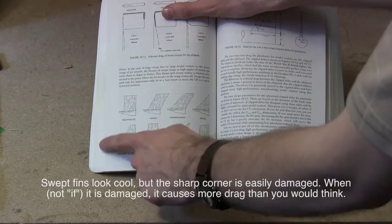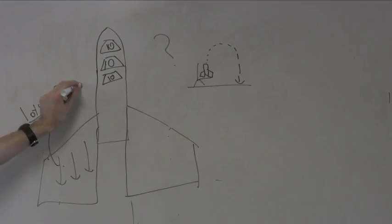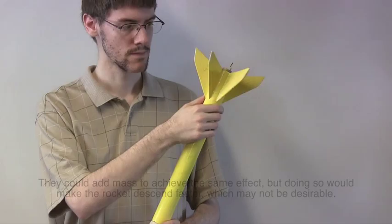In general, larger fins make the rocket more stable, but they are more vulnerable to damage, and they can increase drag on the rocket, decreasing its maximum altitude. Some teams intentionally attach more fins or make them larger to decrease their rocket's maximum altitude if they find it's flying too high.